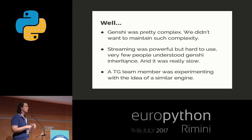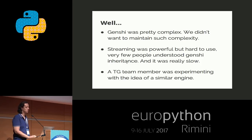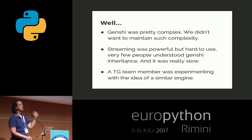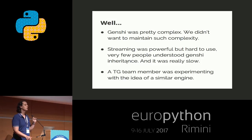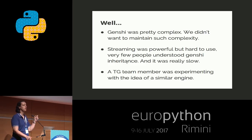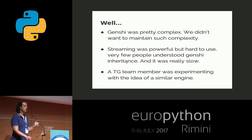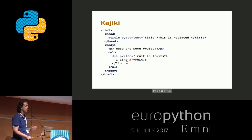Very few people understood the inheritance system of Genshi because it was really complex. We were lucky enough that one of the TurboGears core contributors was working at SourceForge at the time, and SourceForge was looking for a new template engine that could replace Jinja and be as fast or even faster, but with better validation. So they started experimenting with the idea that then became Kajiki.